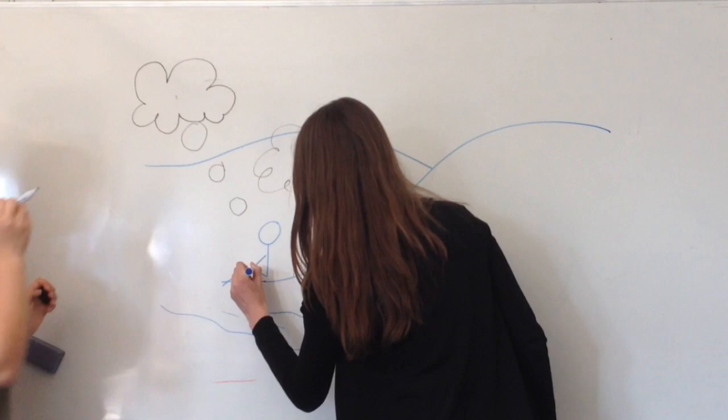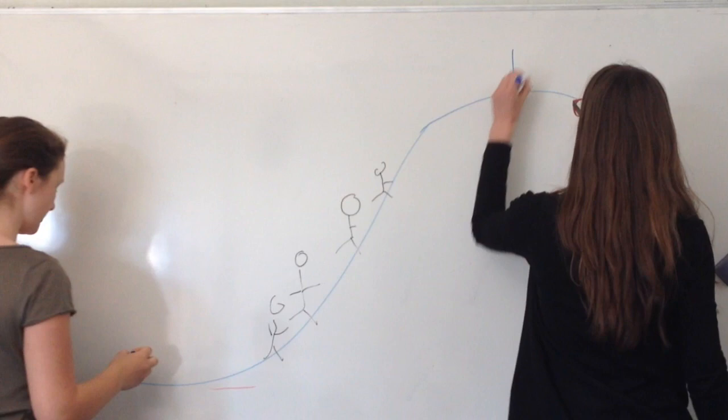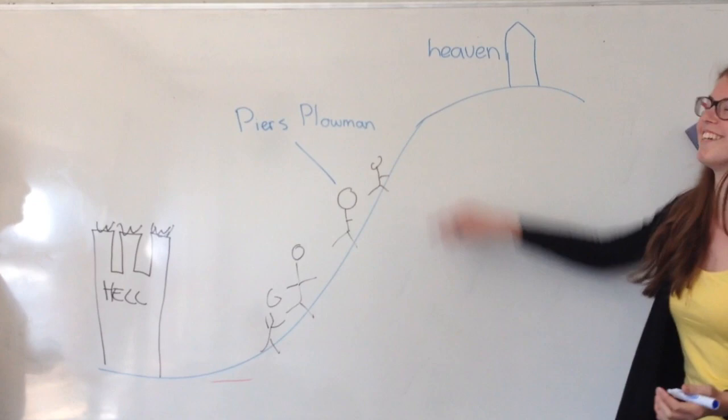Somewhere in the Malvern Hills a man named Will falls asleep and starts dreaming. He sees a tower set upon a hill and a fortress in a deep valley. Between these symbols of heaven and hell is a fair field full of folk, representing the world of mankind.